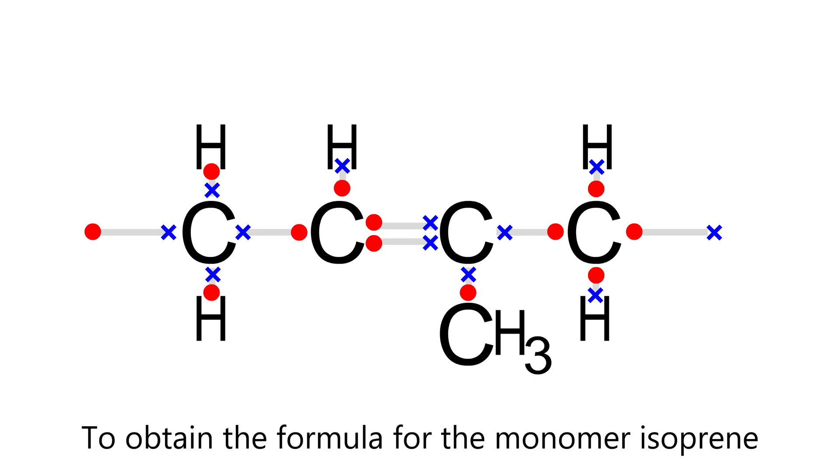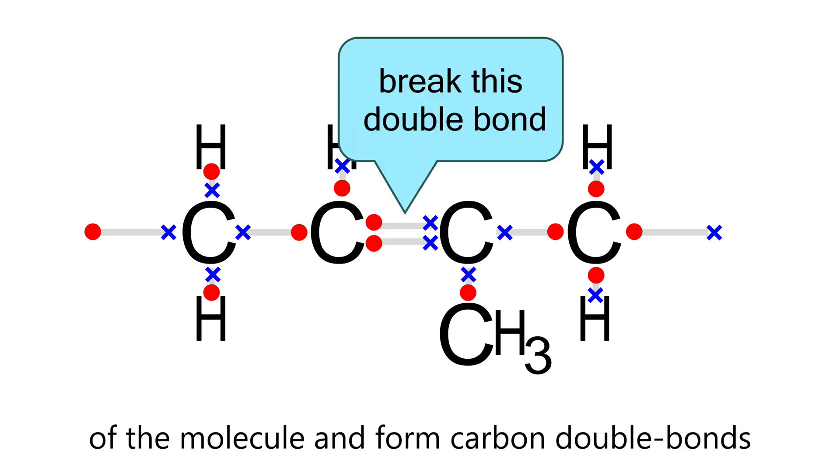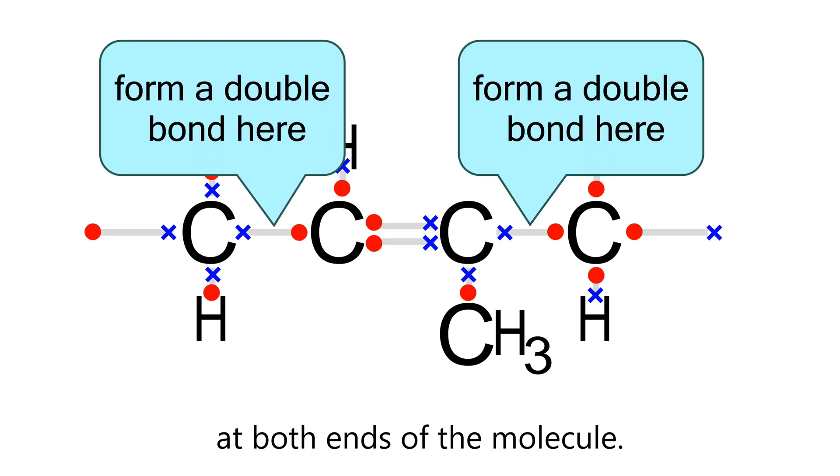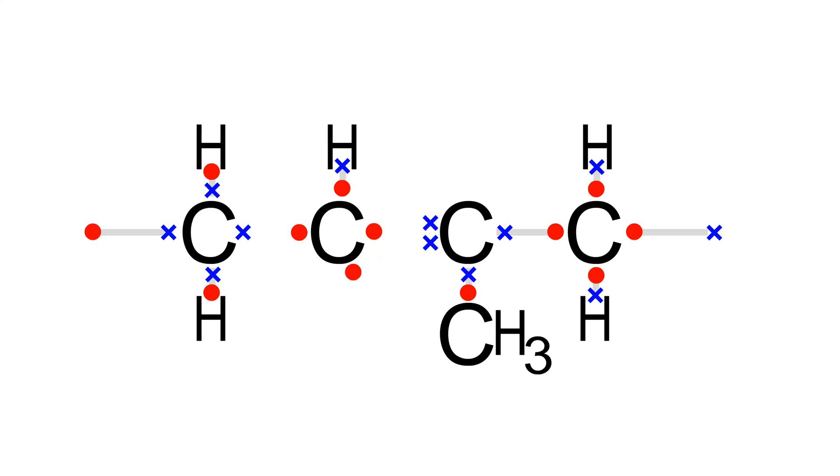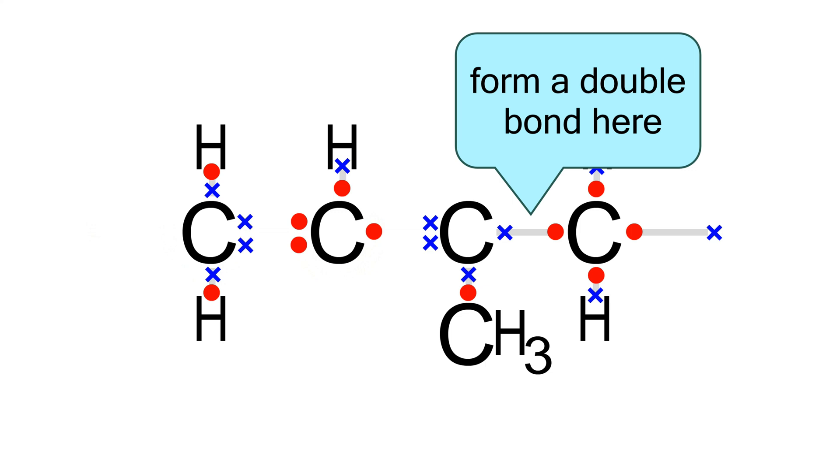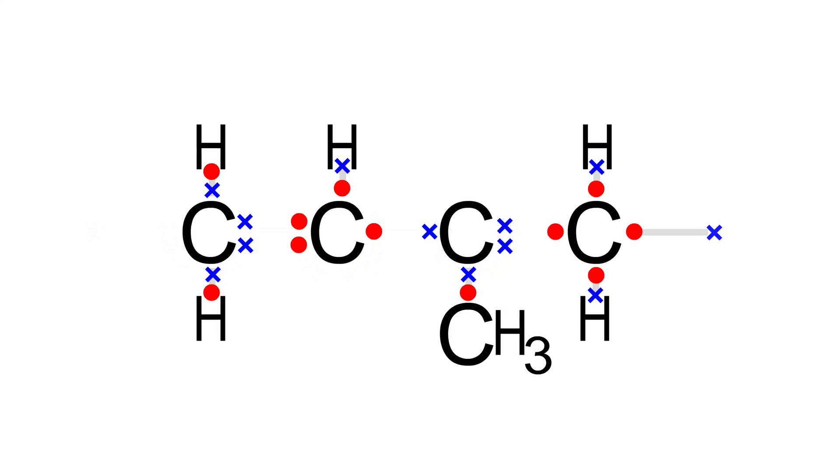To obtain the formula for the monomer isoprene, break the carbon double bond at the center of the molecule and form a carbon double bond at both ends of the molecule.